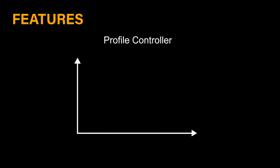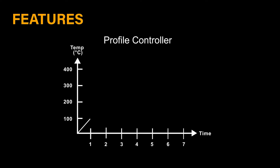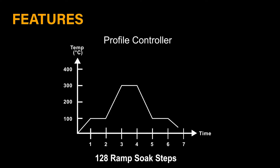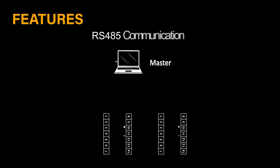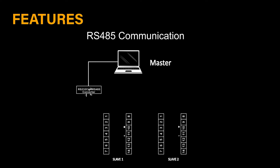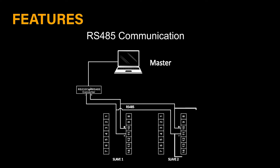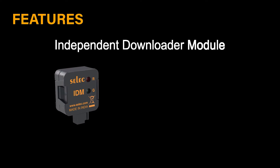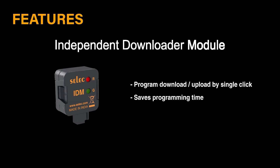For profile control, it has 8 programs with each program having 16 steps, giving a total of 128 steps for ramp soak. With RS-485 Modbus communication, the user can read and write various parameters in the PID controller remotely. An independent downloader module allows the user to program multiple controllers with ease, without the hassle of manually programming each product — with a simple click.